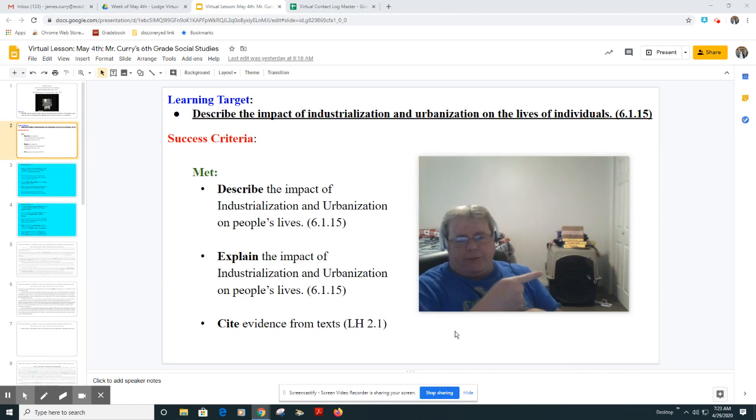So how are we going to reach this? Describe the impact of industrialization and urbanization on people's lives, then explain the impact of industrialization and urbanization on people's lives. Cite evidence from the text. When describing, you're going to tell me what it looks like.